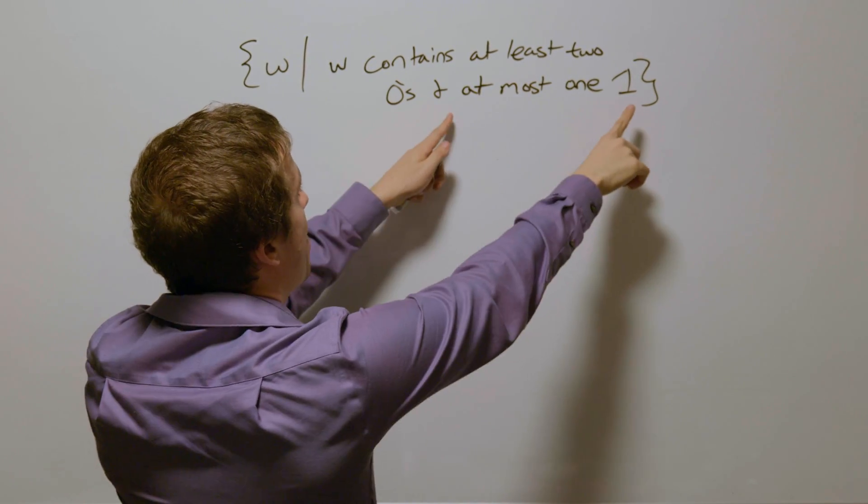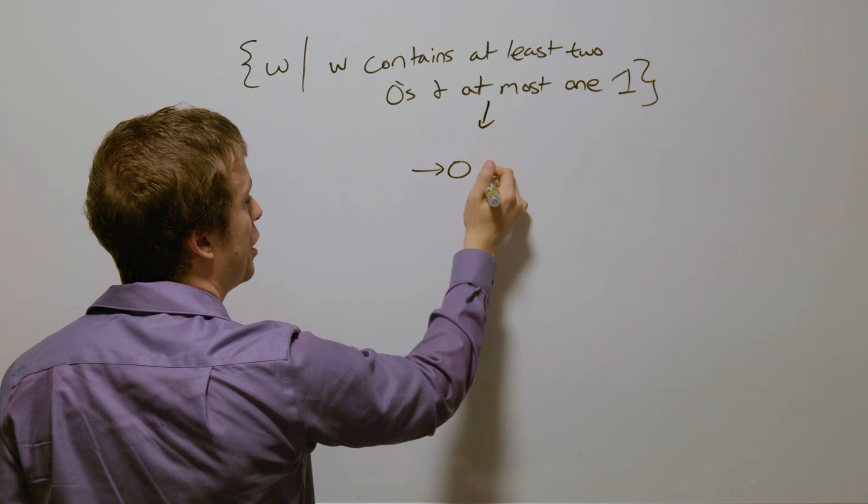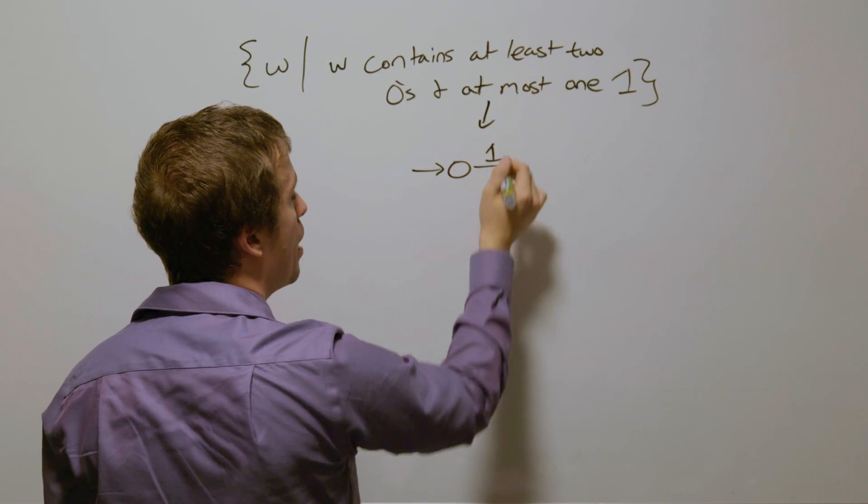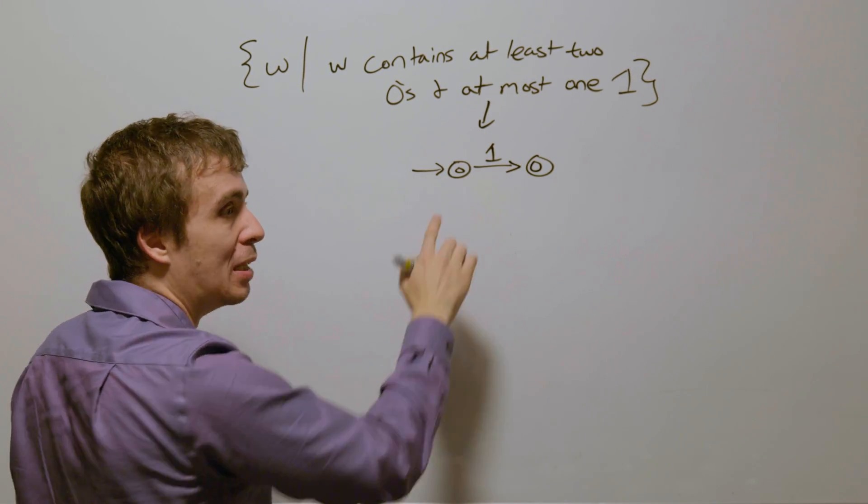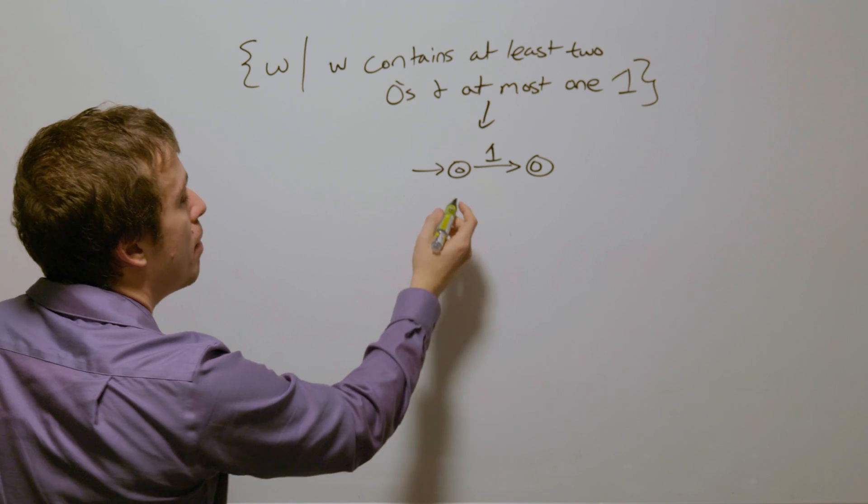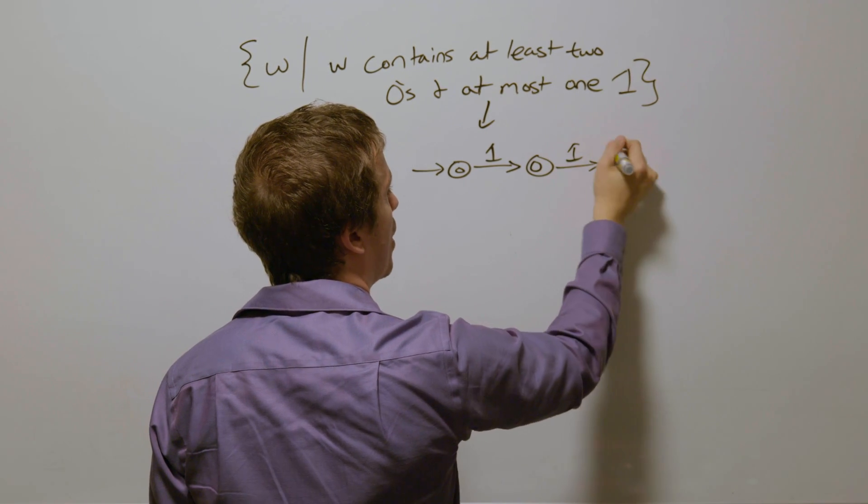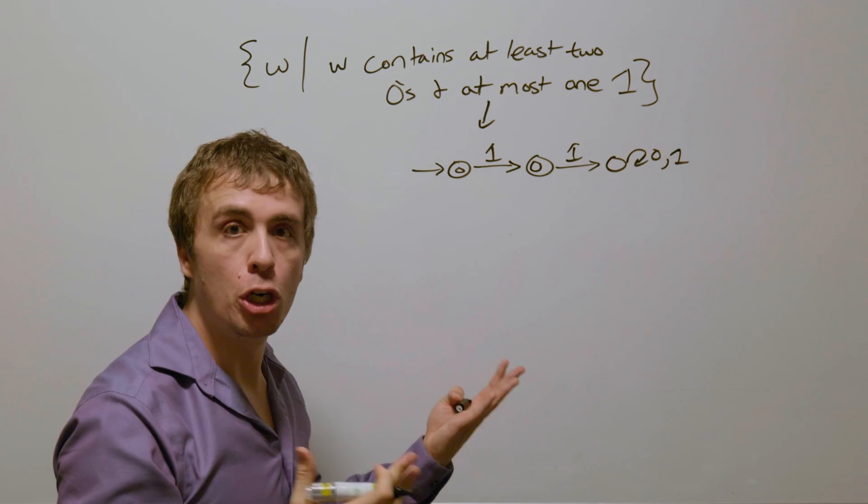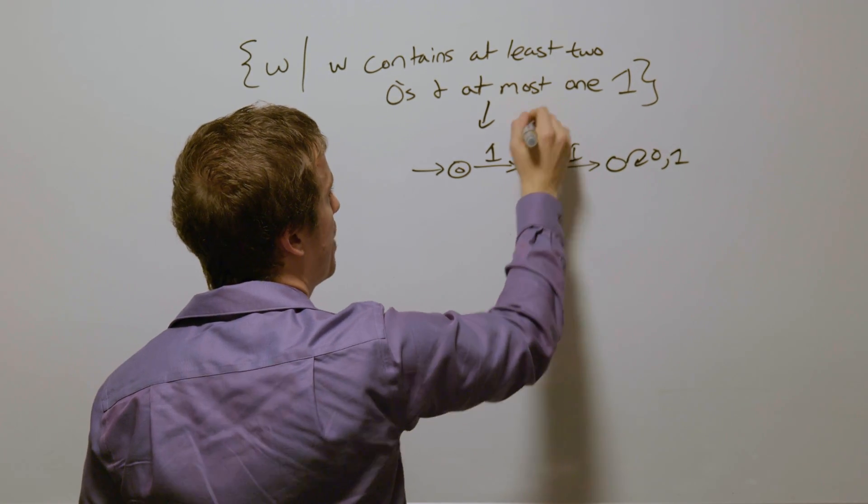Let's focus on at most one occurrence of one. So that one's going to be, I need to make a start state. If we read a single one, that's still okay. If we read zero ones, that's still okay because that's at most one one, but if we read another one, then we're hosed. If we read a zero anywhere, that doesn't change the number of ones, and so therefore those need to be self loops.